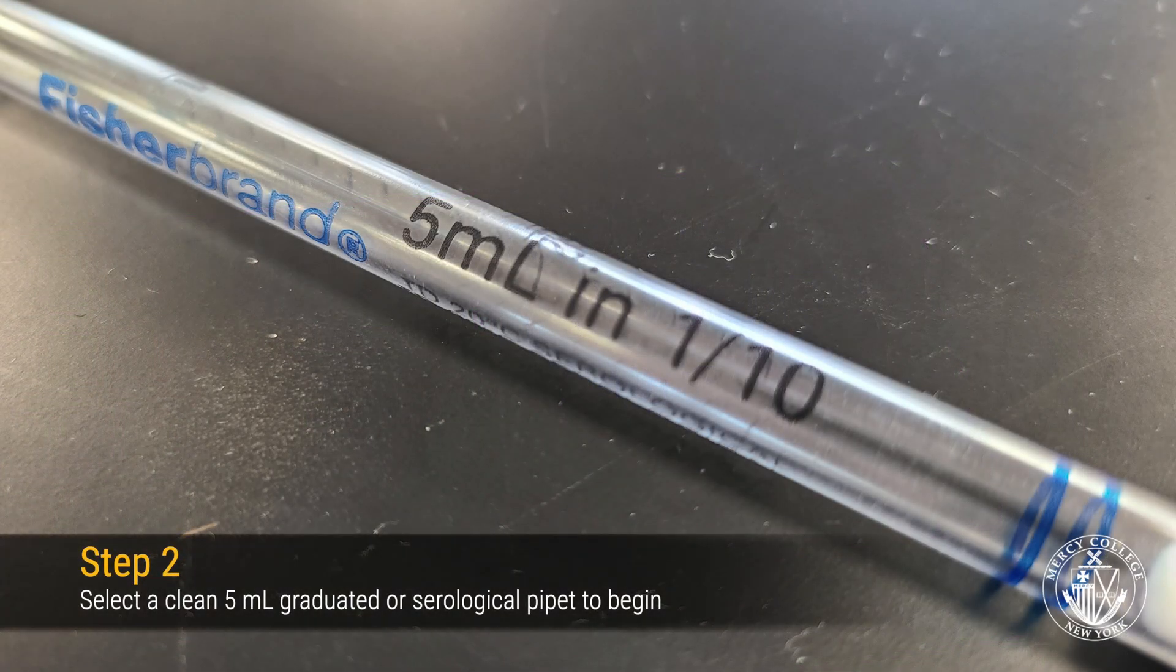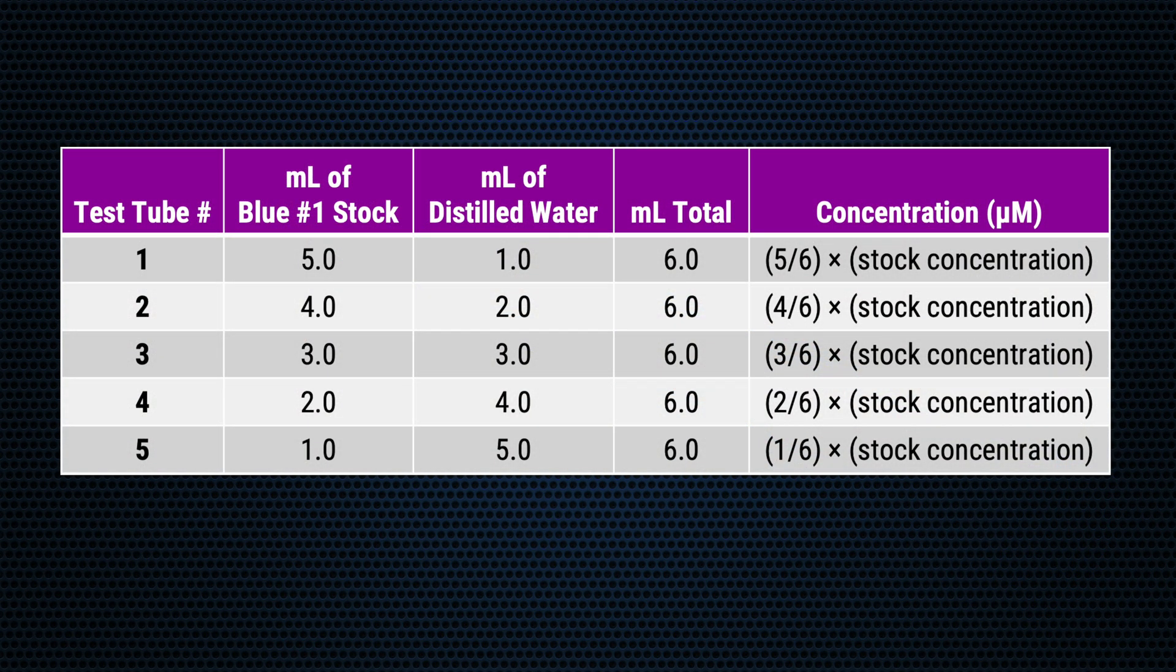Next, we'll use a 5 milliliter pipette to prepare our Beer's Law standards. Use the volumes provided in the dilution table as a guide.